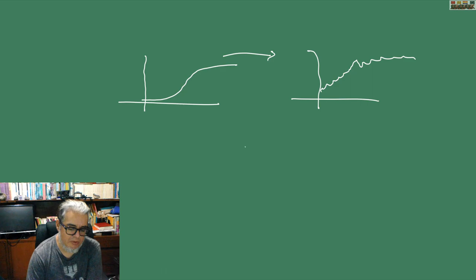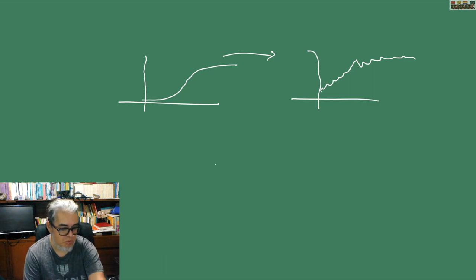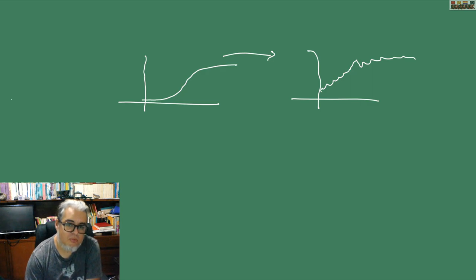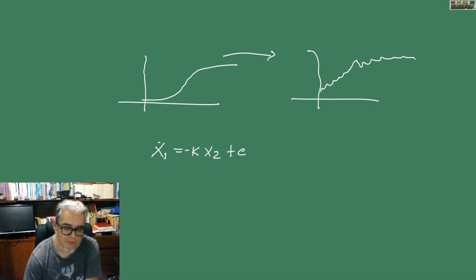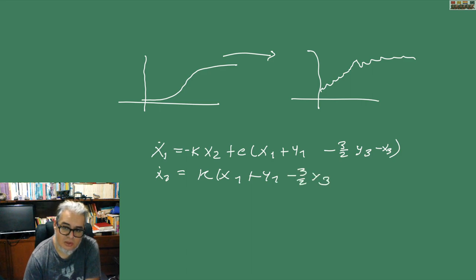What you need is that third equation — u·x3 minus v·x3² — and what you will do is adjust u and v. What is sought from x3 is that it exhibits some Hopf bifurcation. After working with it, we can rewrite the system as x1 dot equals minus k·x2 plus ε times (x1 + y1 minus 3/2·y3 minus x3).